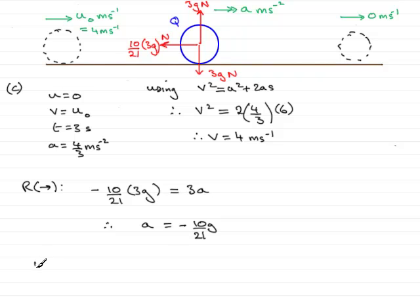I'm going to use the equation V equals U plus AT. Because I know the final velocity, it's 0, so we can put therefore 0 equals the initial velocity U, was 4 meters per second, so that's 4, plus the acceleration, which is now minus 10G over 21, so that's minus 10G over 21, and then times the time T.